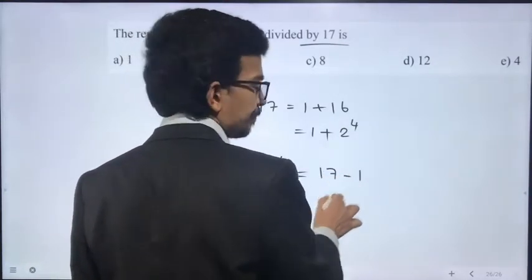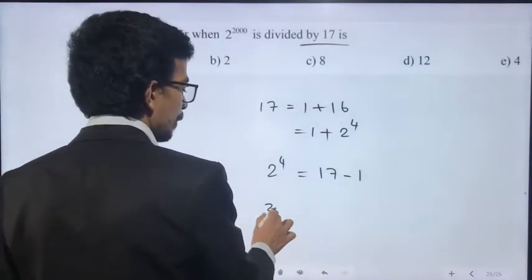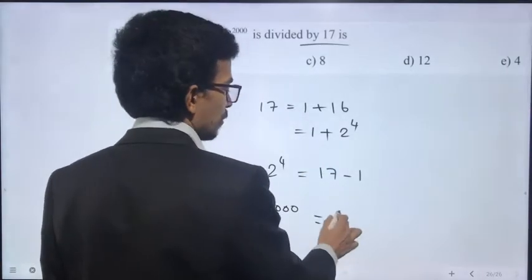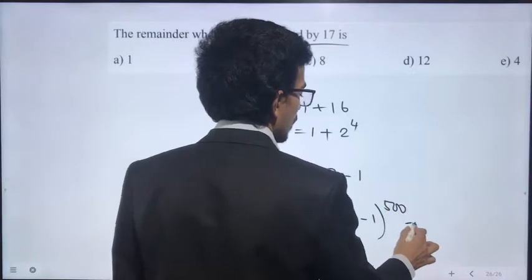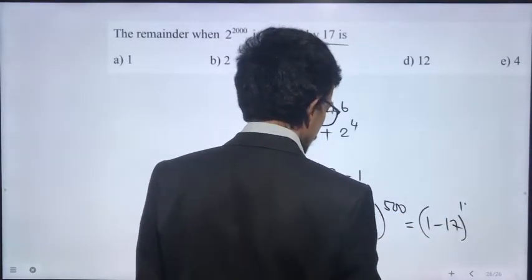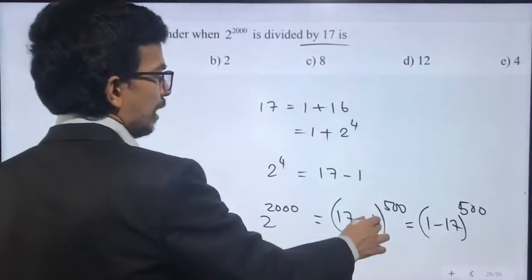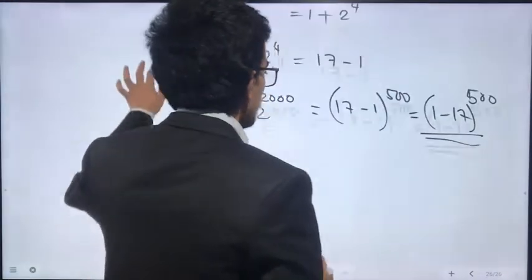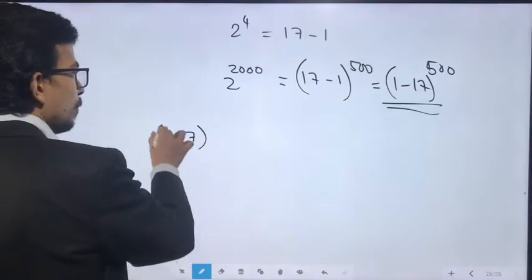Basically 2^4 is 17 minus 1. So 2^2000 equals (2^4)^500, which is (17 - 1)^500. That is (1 - 17)^500.